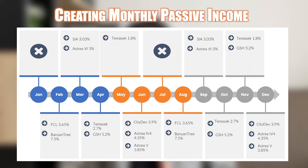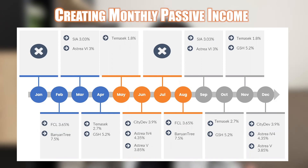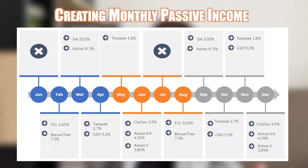If you want to invest in retail fixed income securities to get monthly dividend cash flow, here's an illustration showing that you can buy several different bonds to create a monthly passive income stream. However, note that there is currently no retail bond listed on SGX that pays dividends in January or July, so you may want to consider Singapore Savings Bonds to fill those months.